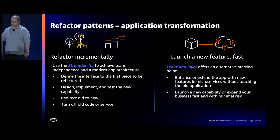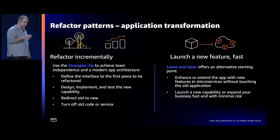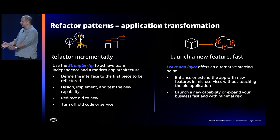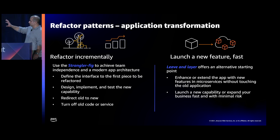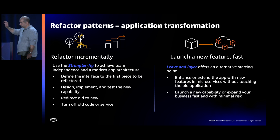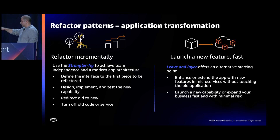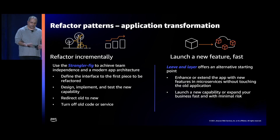The other method is what we call leave and layer — I would be able to build net-new functionality, leave the monolith as is, but build net-new functionality on top. I use the example of a mobile payment application: have that as a separate application, kind of like having a second store next to it and being able to send customers specifically to that endpoint. Both methods work and we can talk about both of them today.